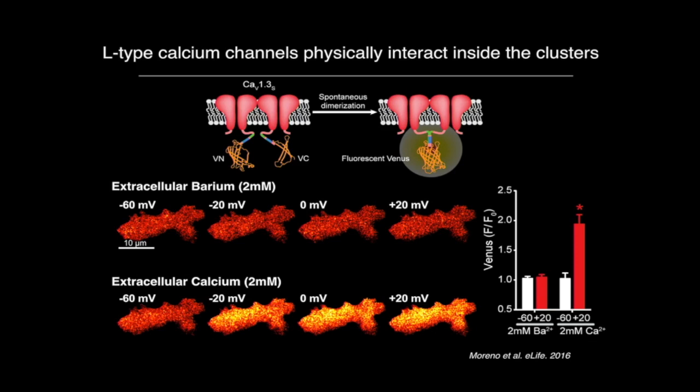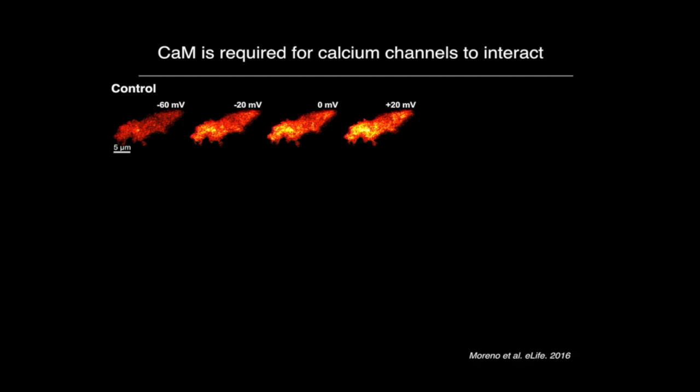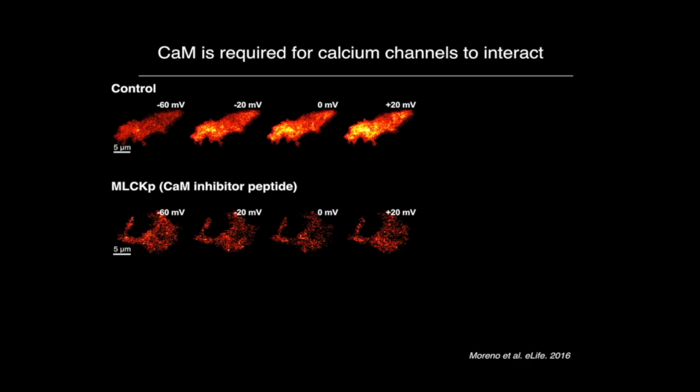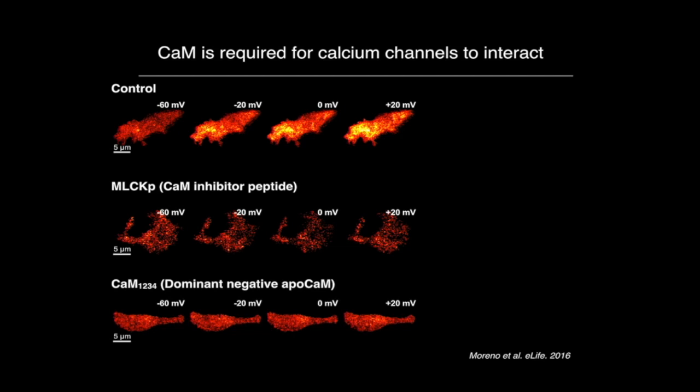It is known that these channels are regulated by a protein called calcium-calmodulin. We demonstrated that calcium-calmodulin mediates the physical interaction between L-type calcium channels. In a control cell in calcium solution, we open the channels, calcium gets into the cell, and we see an increase in fluorescence reconstitution — showing channels are touching. But this physical interaction is completely abolished when using either a peptide that inhibits calcium-calmodulin or a dominant negative of calcium-calmodulin that is unable to bind calcium.